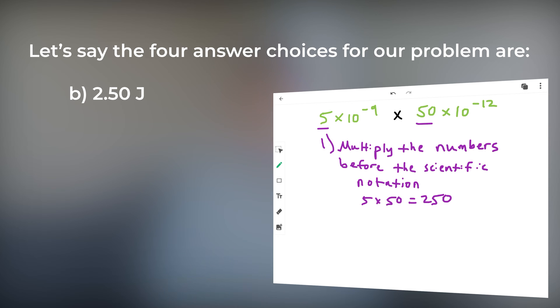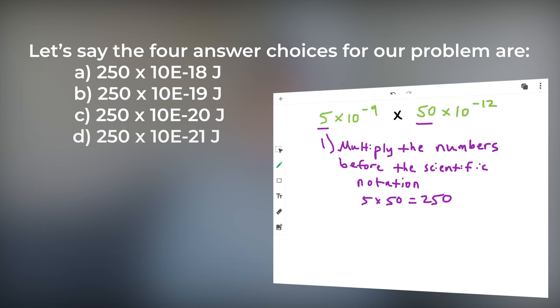Let's say, however, the answer choices for our problem look something like this. a) 250 times 10 to the negative 18th joules, b) 250 times 10 to the negative 19th joules, c) 250 times 10 to the negative 20th joules, and d) 250 times 10 to the negative 21 joules.